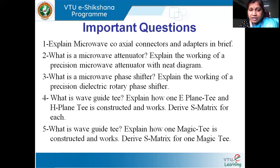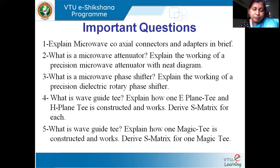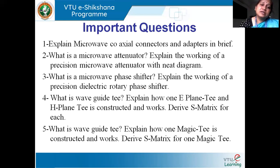Next question: what is a waveguide T? Define the T-junction, then explain how E-plane T and H-plane T are constructed and work separately, and derive the S-matrix for each. Finally, an important exam question: what is a waveguide Magic T junction? Explain how a Magic T is constructed and works, and derive the S-matrix for a matched Magic T.